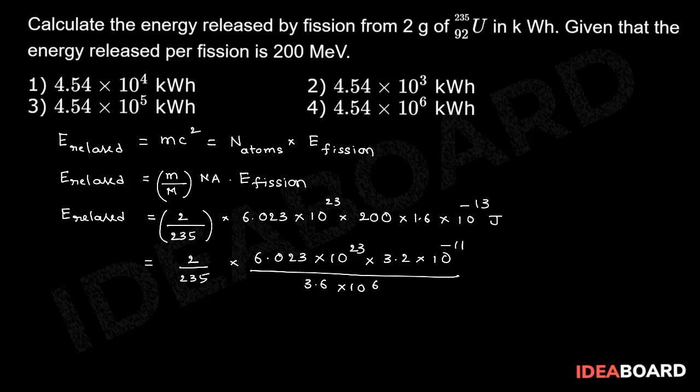Since 1 kilowatt hour is equal to 3.6 into 10 power 6 joules.